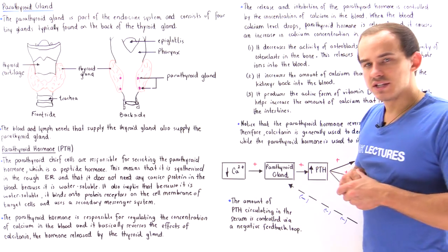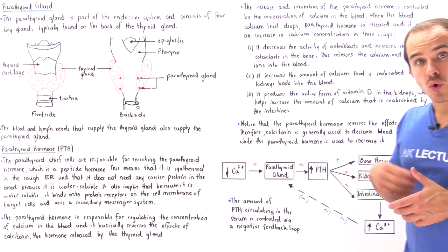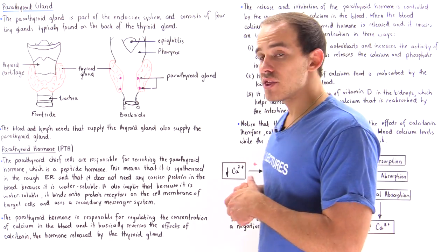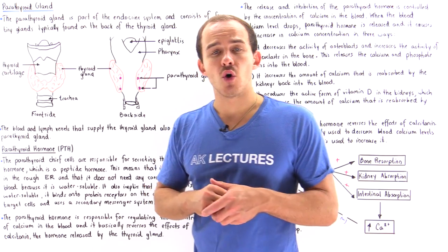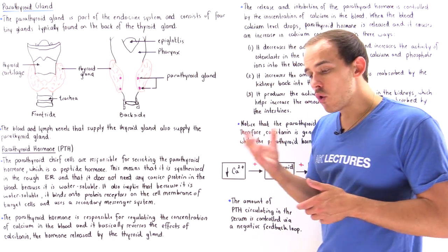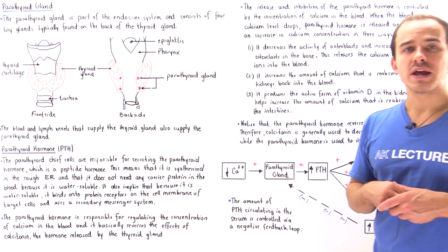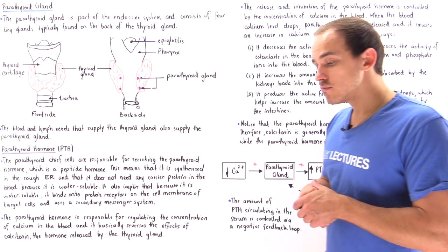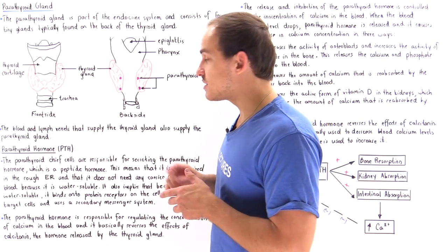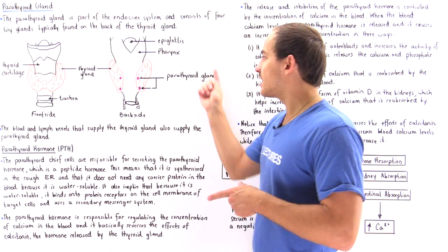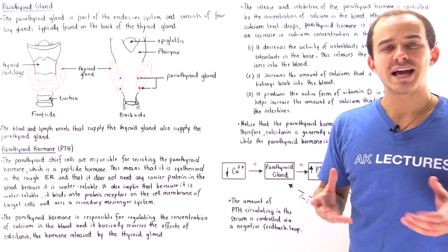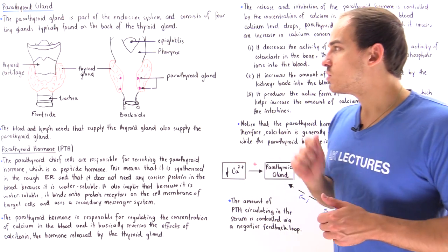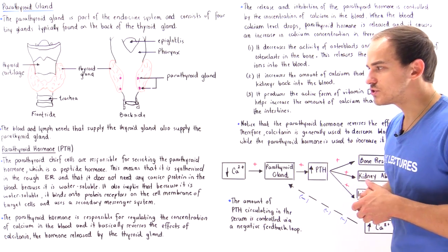The next question is: what are the hormones — or hormone — that is released by the parathyroid gland? We basically only have one hormone. The hormone is known as the parathyroid hormone, and this parathyroid hormone is produced in special cells inside the parathyroid gland known as the parathyroid chief cells or the parathyroid principal cells.